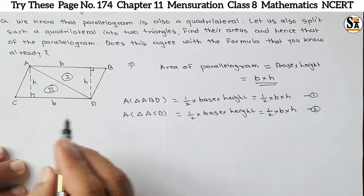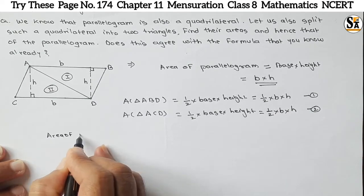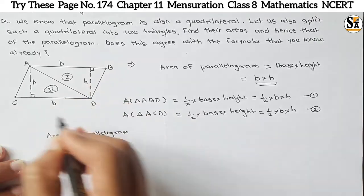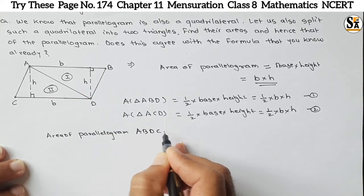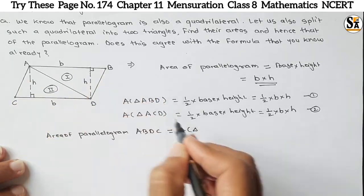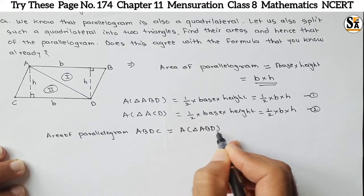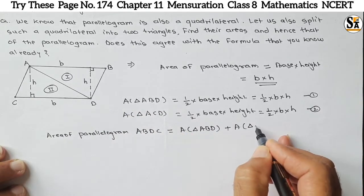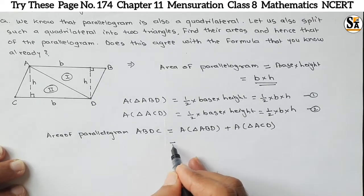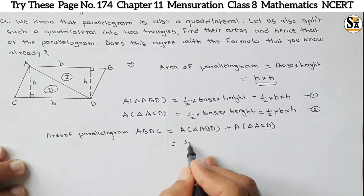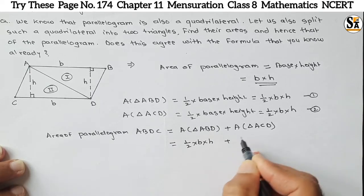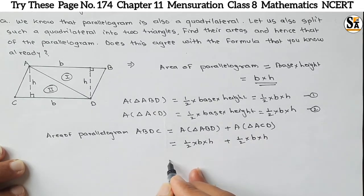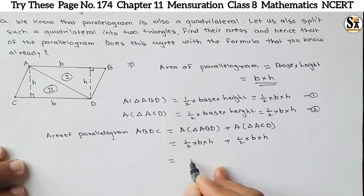Now if we add the areas of these two triangles, area of parallelogram ABDC equals area of triangle ABD plus area of triangle ACD. That is one-half into B into H, plus one-half into B into H. Adding these two halves gives us B into H.